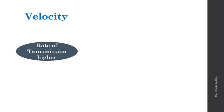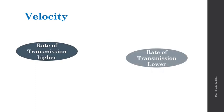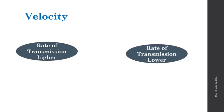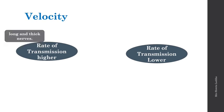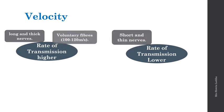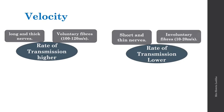Velocity or speed: the rate of transmission of nerve impulse is higher in long and thick nerve fibers (more diameter) and lower in shorter and thinner nerve fibers. In voluntary fibers, the rate of transmission is about 100 to 120 meters per second — very fast. Whereas in involuntary fibers it is 10 to 20 meters per second. Involuntary autonomic nervous system muscle fibers conduct at a much slower speed compared to voluntary fibers.